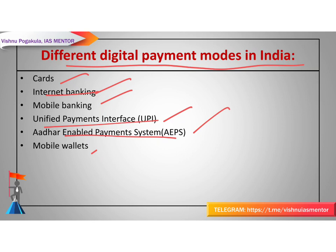Next is the Aadhaar Enabled Payment System — AEPS. This is a bank-led model that allows online interoperable financial transactions at a Point of Sale or any micro ATM through the business correspondent or bank mitra of any bank, using Aadhaar authentication to allow the financial transaction.